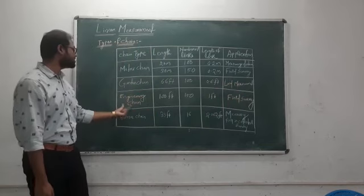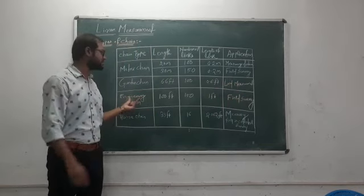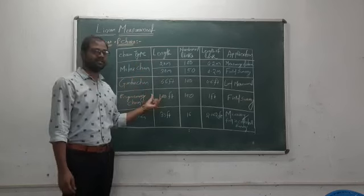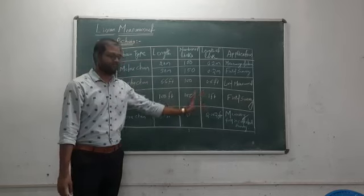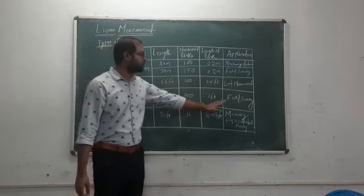The third one is the engineer's chain, which is otherwise known as a surveyor's chain. Its length is 100 feet and it comprises 100 links, so each link is 1 foot. It is widely used for field surveys.